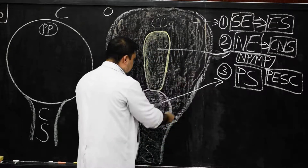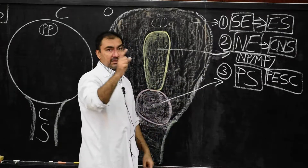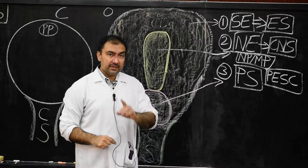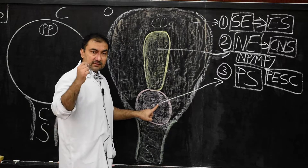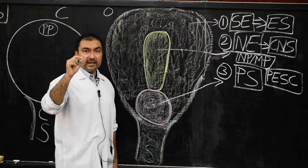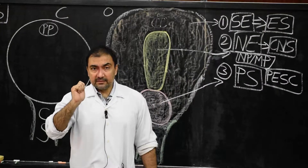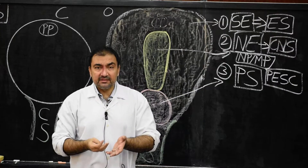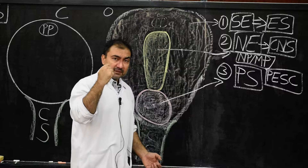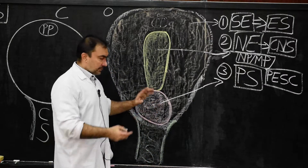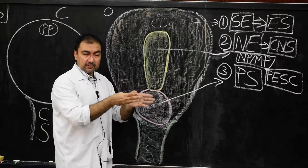So we have understood the three differentiations from the epiblast: surface ectoderm, neuro ectoderm, and primitive streak. The disc then becomes pear-shaped. Surface ectoderm will slowly develop into the epidermis of the skin, neuro ectoderm will differentiate into the central nervous system, and now it is time for the primitive streak to further differentiate and start its action.